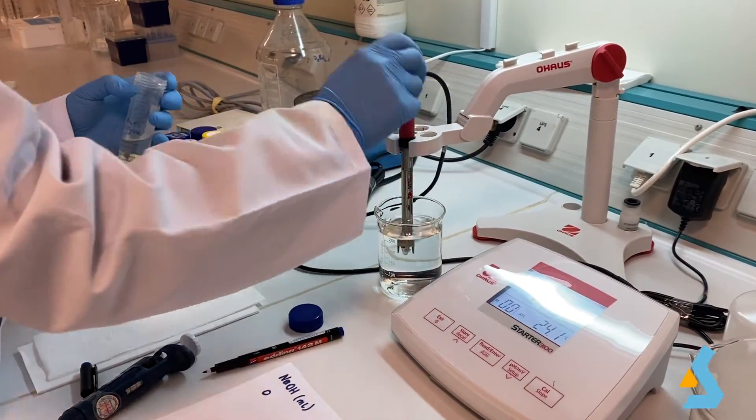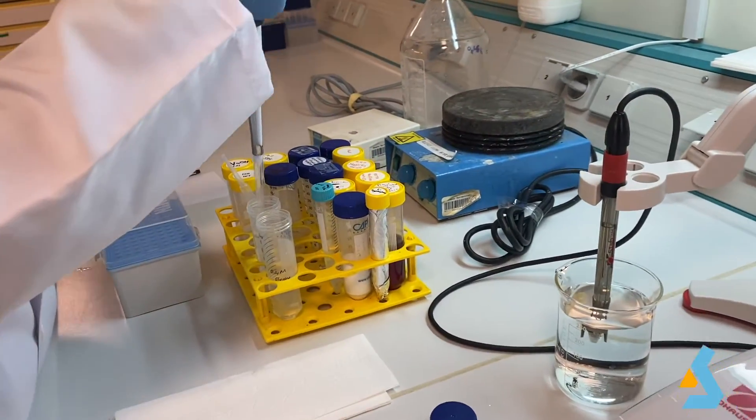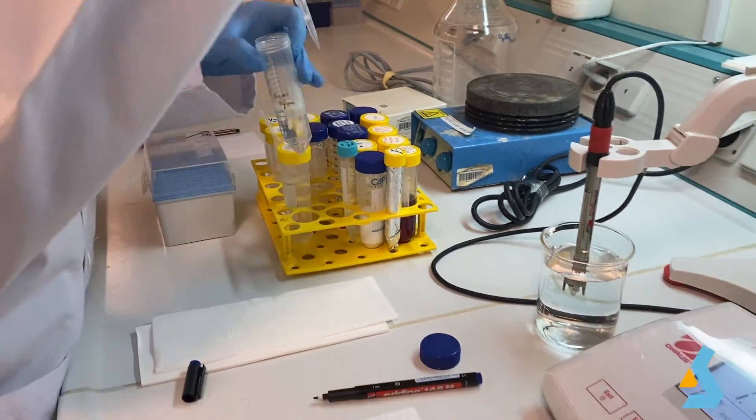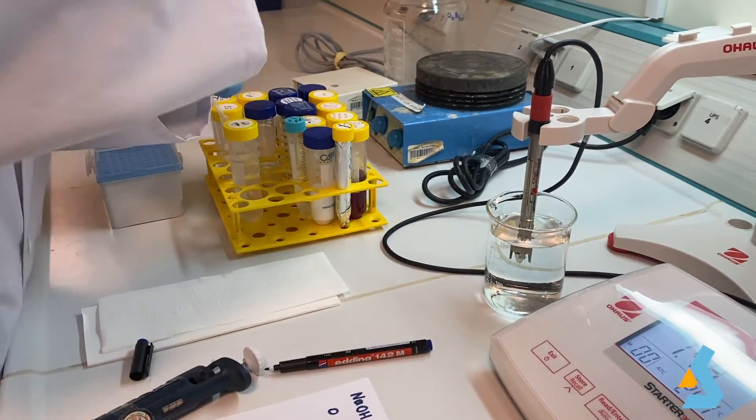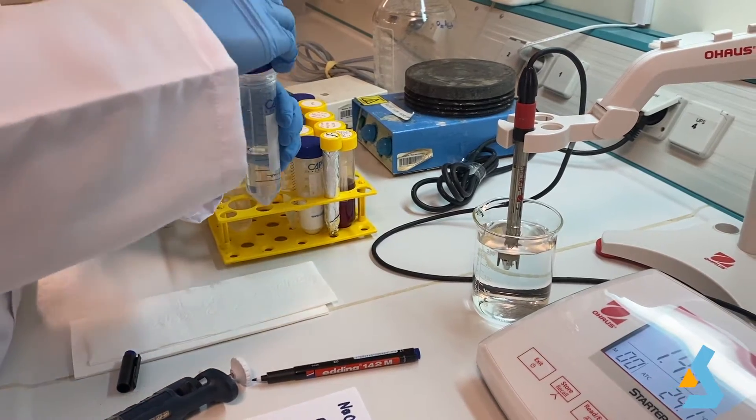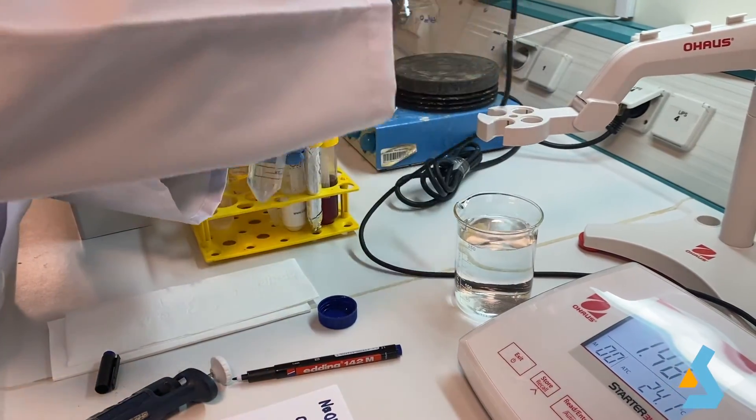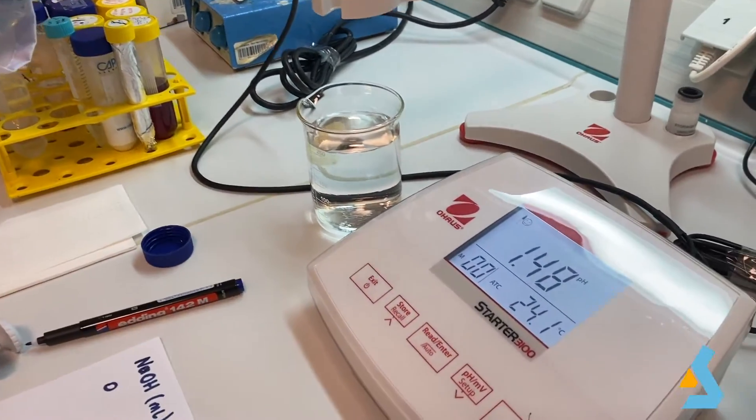We will add 0.5 ml portions of sodium hydroxide, mix the solution in the falcon by inverting, then measure the pH and finally write down the findings to tabulate the measurements. This addition will be repeated consecutively until the pH reaches around 12. This should give us enough data to plot the titration curve.